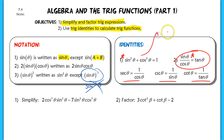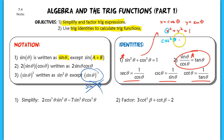The identity sine squared theta plus cosine squared theta equals 1 comes from the unit circle equation x squared plus y squared equals 1. By definition, x equals cosine theta and y equals sine theta. Substituting, we get cosine squared theta plus sine squared theta equals 1, using the common notation. This is covered more explicitly in the proof notes, but these are very important identities you'll use in today's lesson and tomorrow.